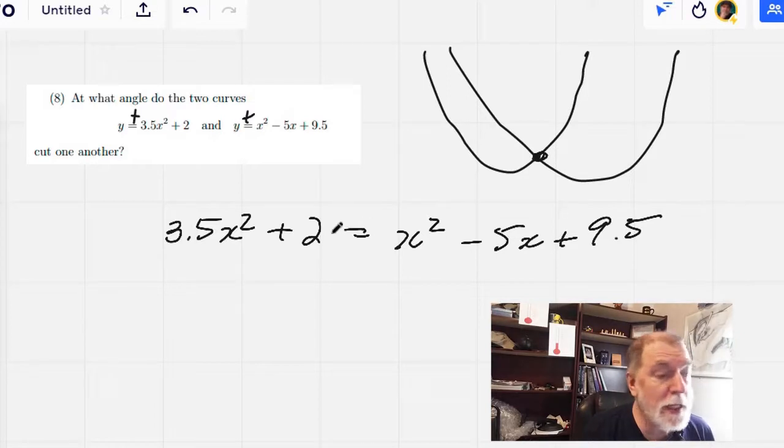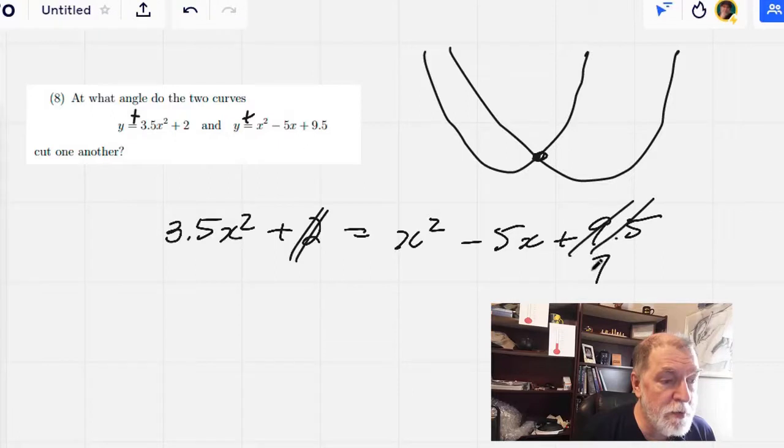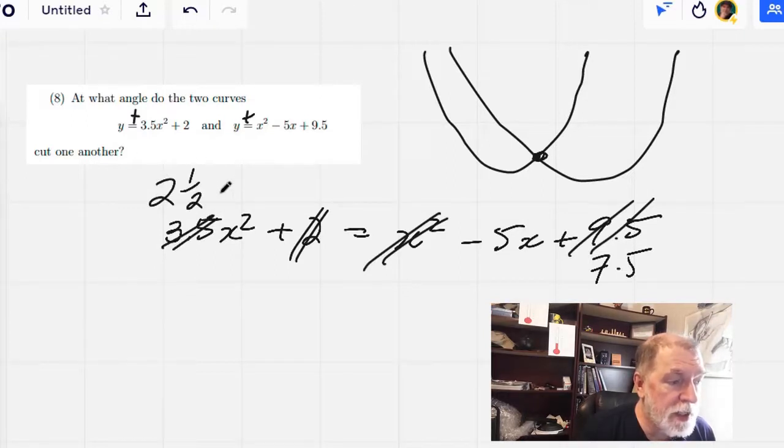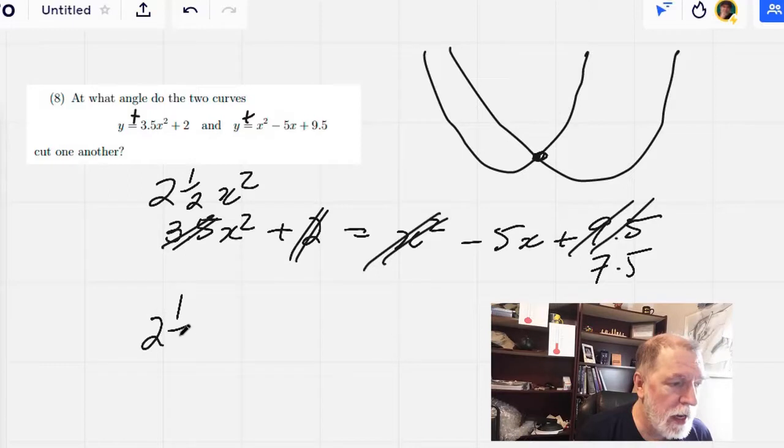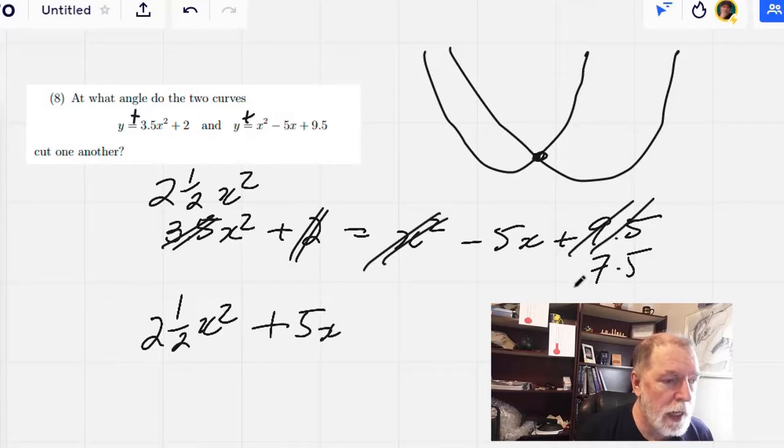So let's lose the two from each side here. So that is going to become 7.5 and then let's lose x squared from both sides. So that's going to become 2.5x squared and then let's haul everything over to the left.